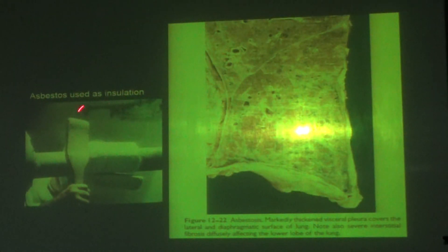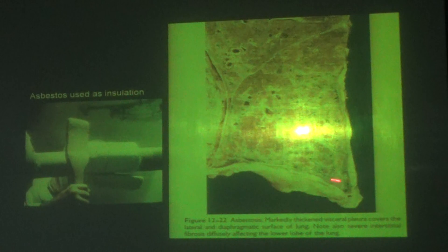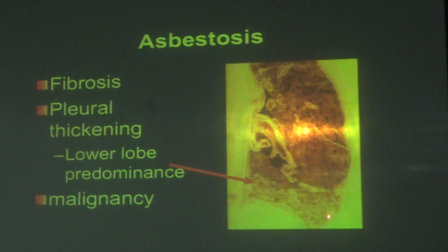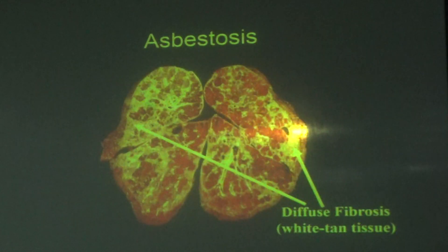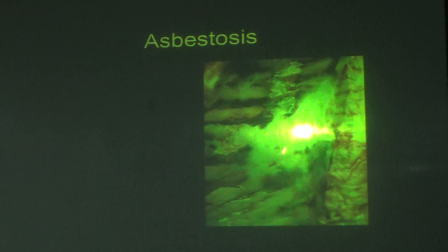Grossly, asbestosis shows thickened visceral pleura and severe diffuse interstitial fibrosis affecting the lower lobe of the lung. The lower lobe shows whitish material representing diffuse fibrosis. Microscopically, the lower lobe shows extensive fibrosis throughout, and pleural thickening is also visible. In asbestosis the fibrosis is diffuse interstitial fibrosis, affecting the lower lobe predominantly, which differs from coal and silica which affect the upper lobe.